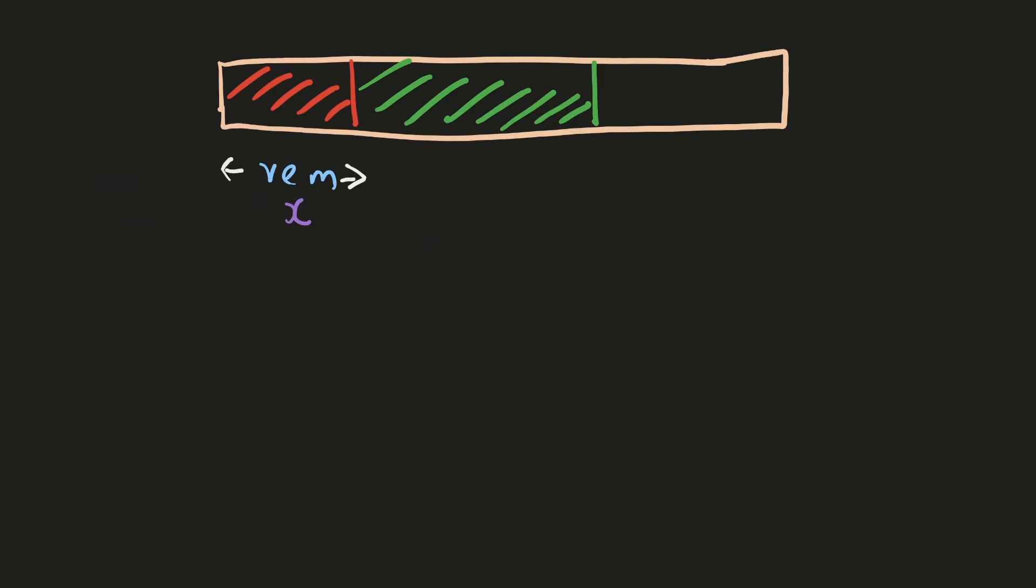What it means is that if we have a subarray which starts from the beginning and has a remainder of x, and if we have another bigger subarray which also starts from the beginning and has a remainder of x, then the subarray that lies between them must be divisible by k.